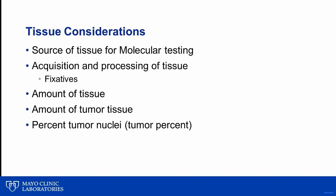There are a number of details to keep in mind when selecting tissue for further molecular testing: the source of the tissue to be used for molecular testing, as well as how it is collected and processed, including what fixative is used, the amount of tumor in that tissue, and the percent tumor nuclei. Each of these will be discussed in more detail in a few slides.